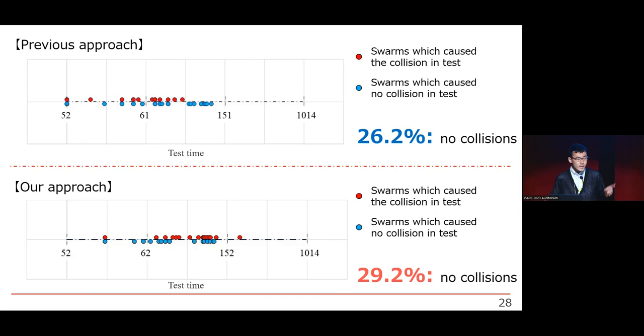And the advantage of our proposal approach is less collision. In the previous approach, the swarms who marked no-collision score was 26%, but this figure improved. 29% of the swarms could conduct the task with no-collision. The trend is that no-collision task swarms can conduct the task earlier is supposed to be the best advantage of our proposal approach.